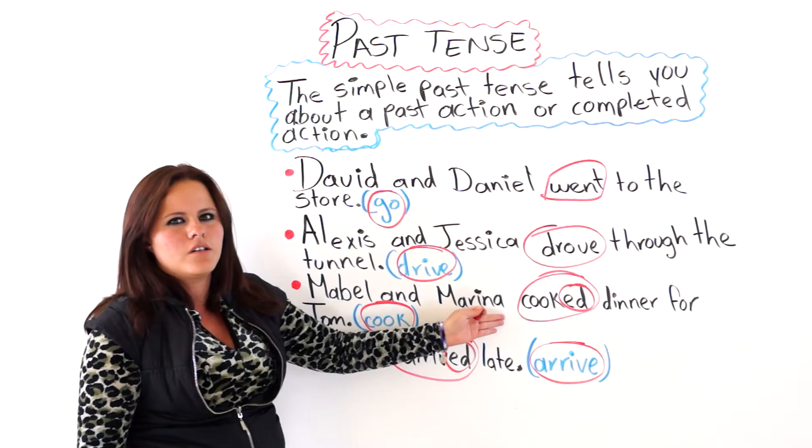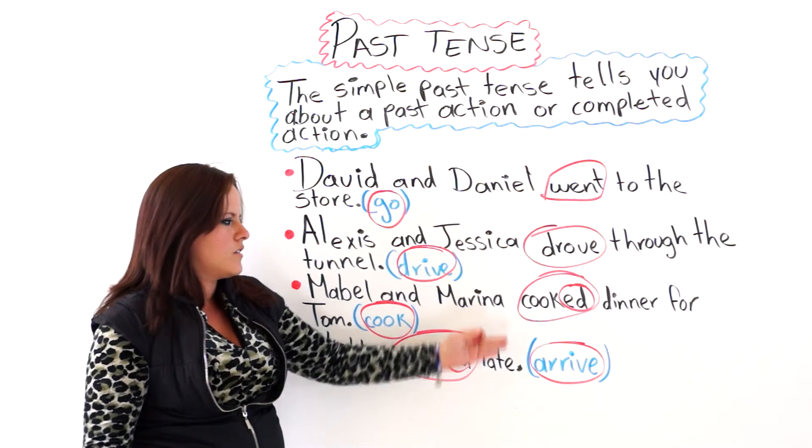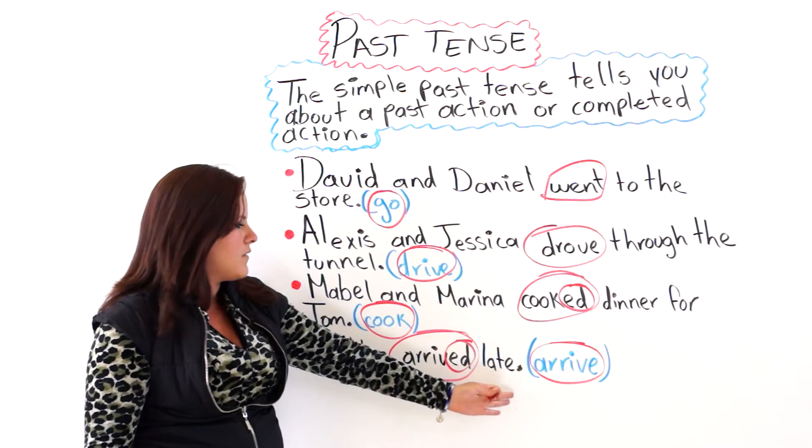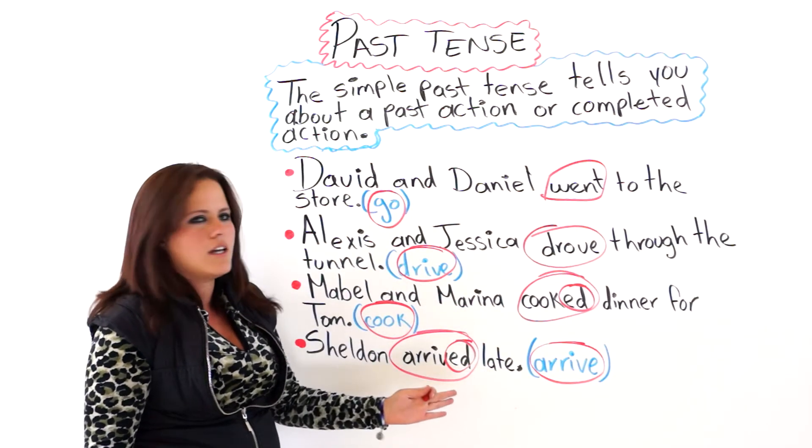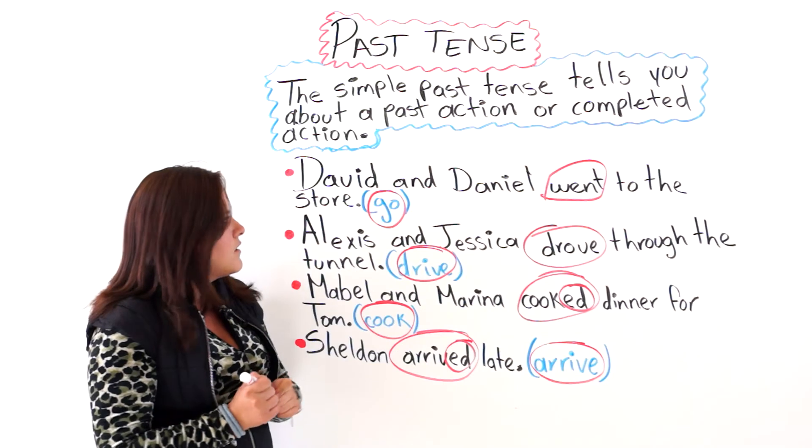Cook, cooked, and cooked. Arrive, arrived, arrived. These are regular verbs — their past and past participle both end in ED.